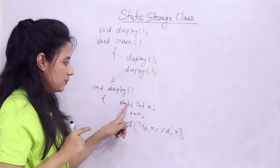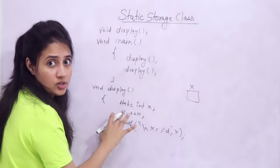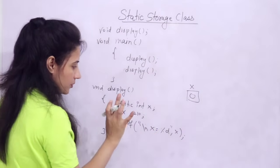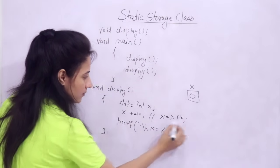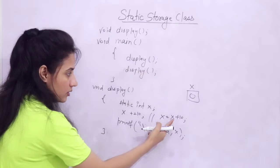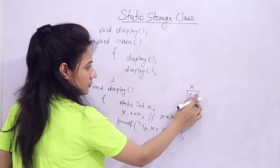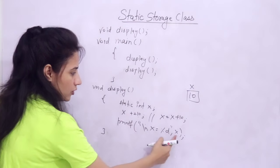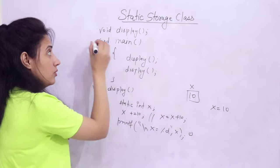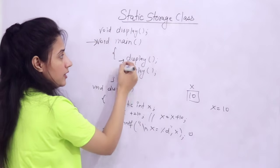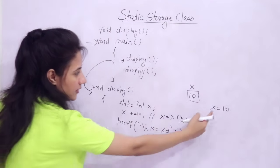I'm calling the display function two times in main. Inside the display function definition, I'm declaring 'static int x'. In main memory, one variable x will be created. Since I'm not initializing it, the default value is 0. The next line is 'x += 10', which is same as x = x + 10, so x becomes 10. The printf prints x = 10. After exiting this function, control goes back to main — x = 10 is displayed.